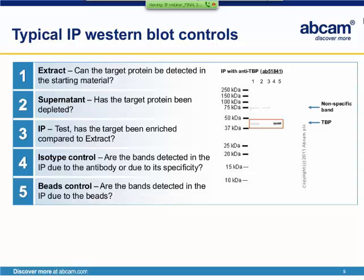The second lane is a fraction of the supernatant after the immunoprecipitation. This is loaded on the gel to determine if the target protein has been depleted from the extract during the immunoprecipitation, and it will tell you how efficient your immunoprecipitation was. The third lane is the immunoprecipitation, so the outcome of the experiment. If the IP was successful and efficient, this band should be enriched compared to the extract.